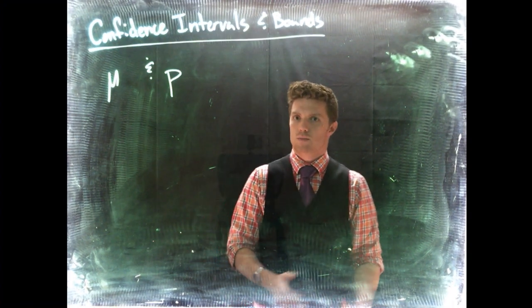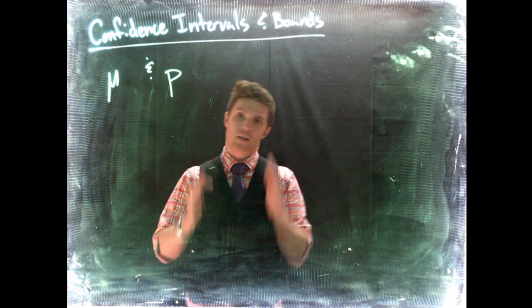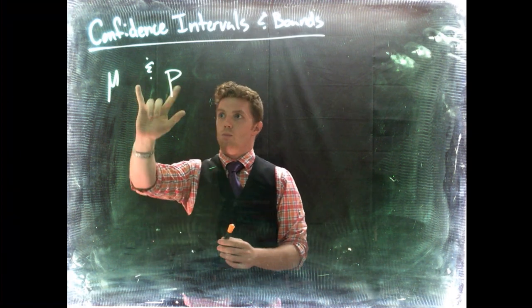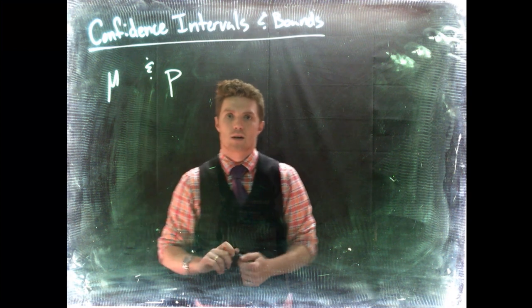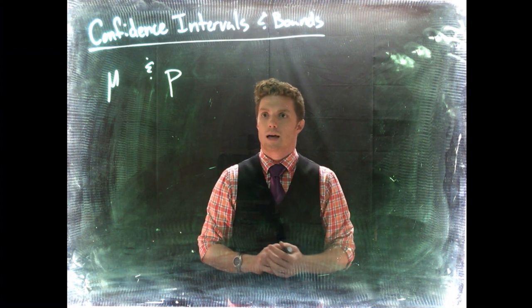We can see how likely is it to have a mean that's super high or a proportion that's super low, or the probability between two things. But so far we've always been given what is the population mean or the population proportion.